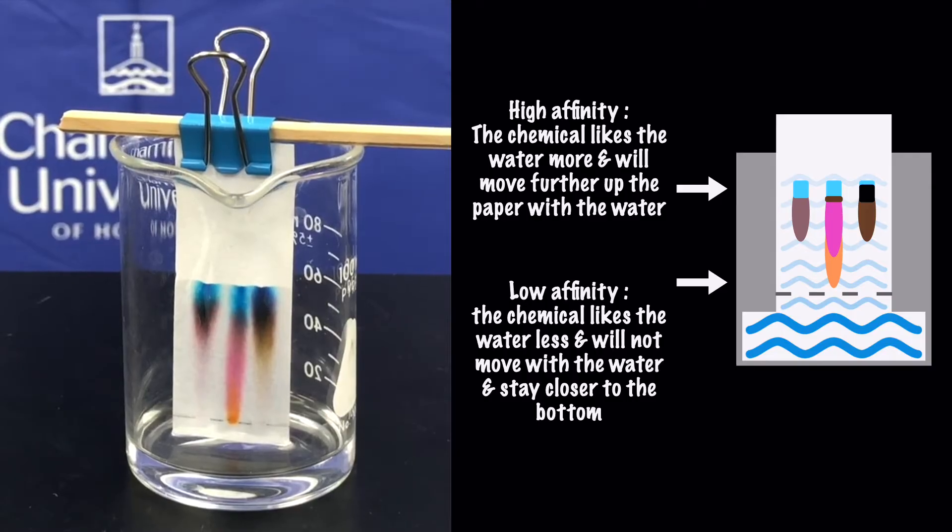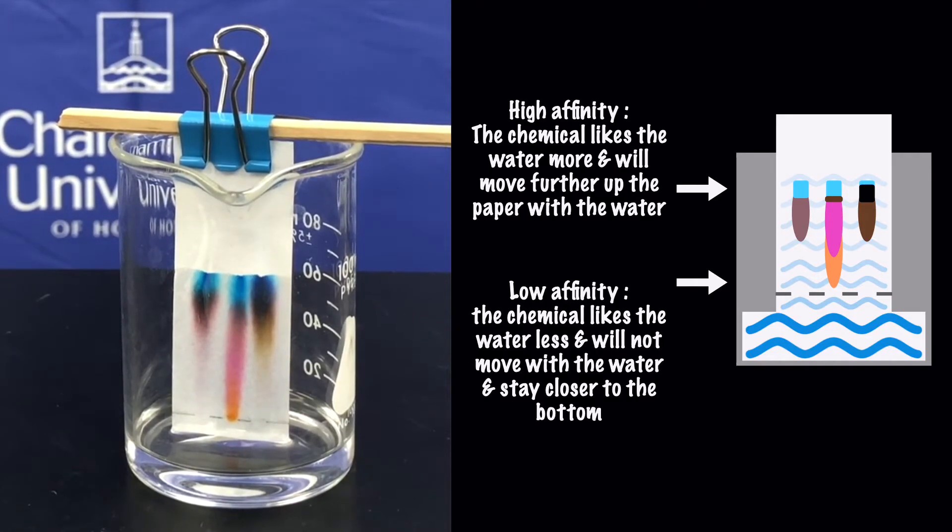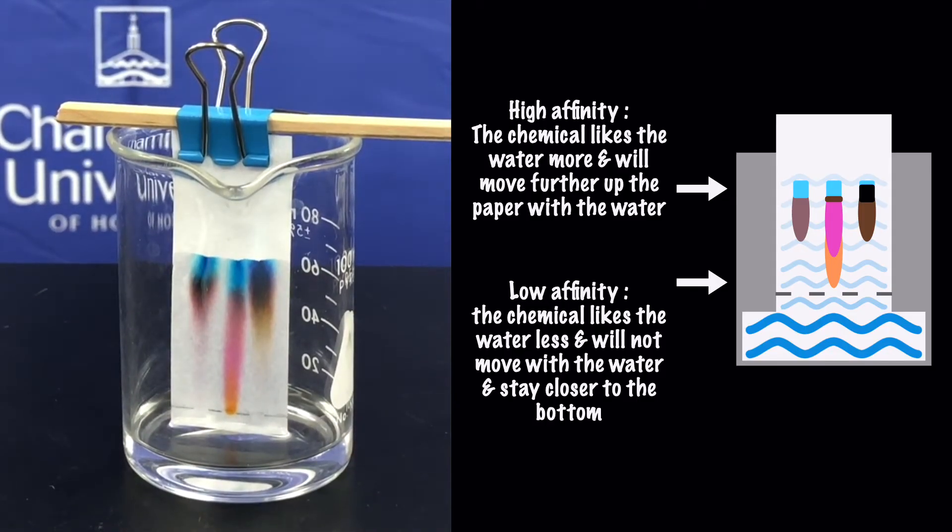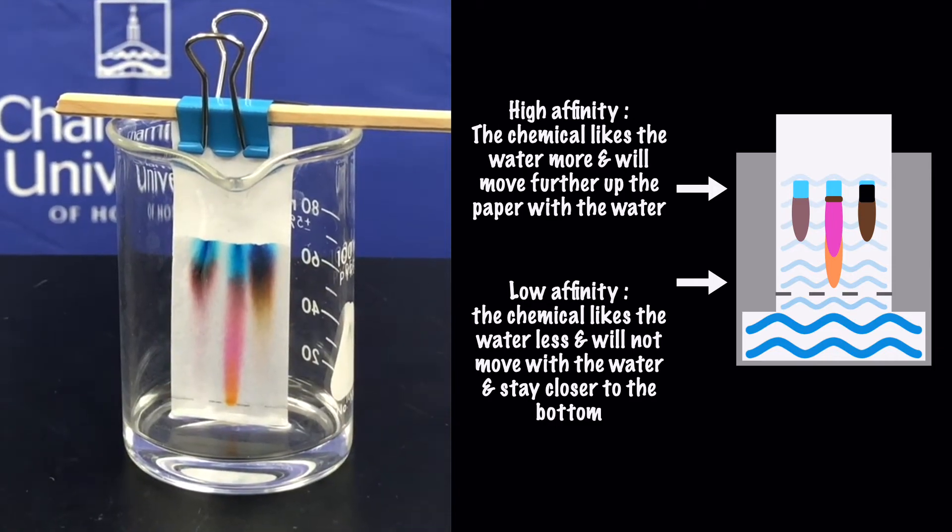For example, if a chemical likes to be with the water a lot, or we say has a high affinity for the water, it will move further up the paper. If the chemical likes the water less or has a lower affinity for the water, it will not move as far up the paper and stay near the bottom.